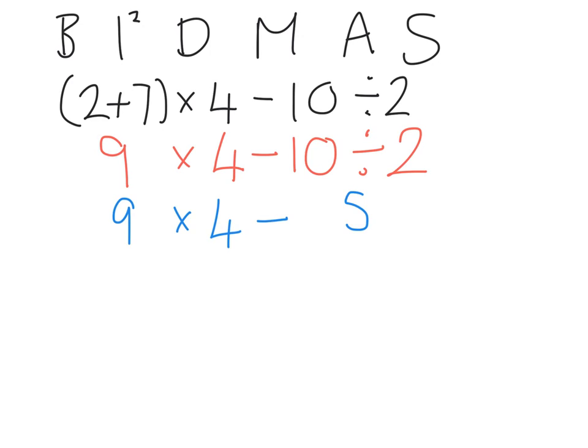So now I'm going to do 9 times by 4 which is 36 and I put the 36 underneath and then underneath I put the take away, underneath the 5 there. And now I can do 36, take away 5, which is 31.